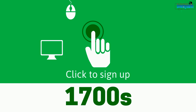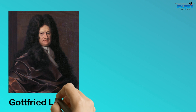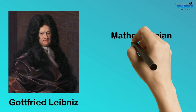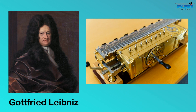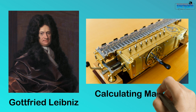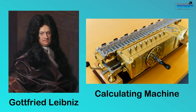Year 1700s. Gottfried Leibniz, a mathematician, is also considered as the first computer scientist. He made his own calculating machine through which he was able to perform all four basic arithmetic operations. He is the first to devise the important concepts of binary arithmetic on which modern information and communication technology is based. This is the calculating machine invented by Leibniz.